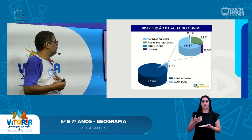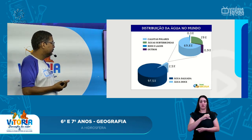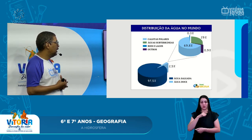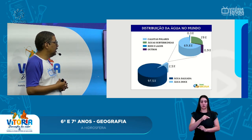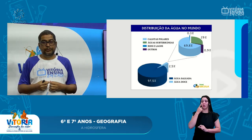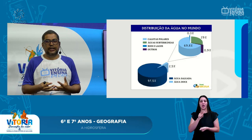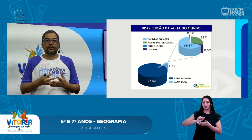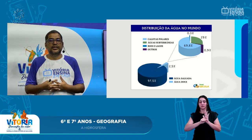A distribuição da água no mundo: 97,5% da água presente no mundo é água salgada e apenas 2,5% é água doce. Então você vê que, apesar de muito abundante no nosso planeta, a água doce — aquela potável, usada para as atividades agrícolas e para o nosso consumo — ela é muito pouca, uma quantidade bastante reduzida.